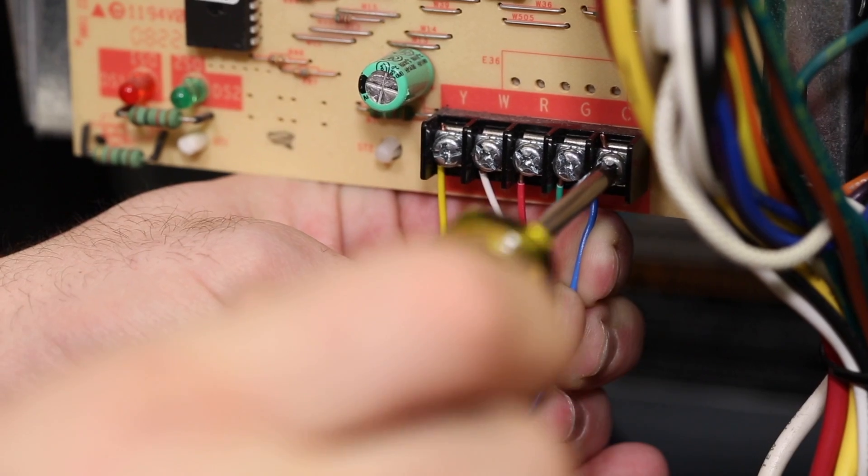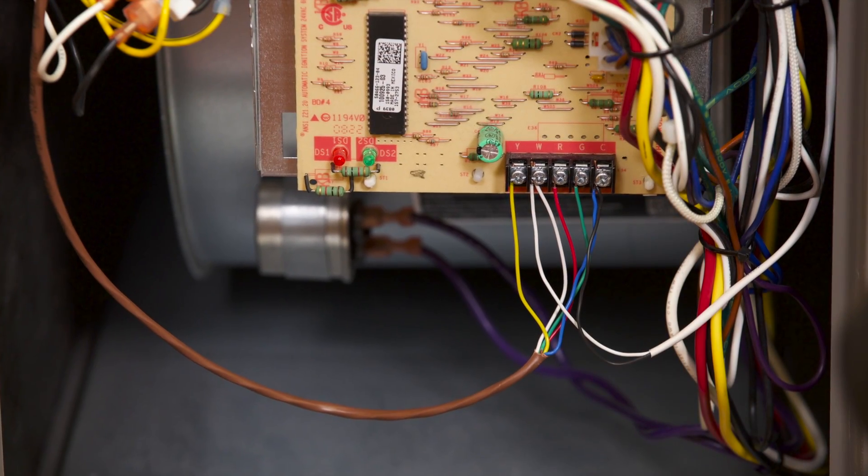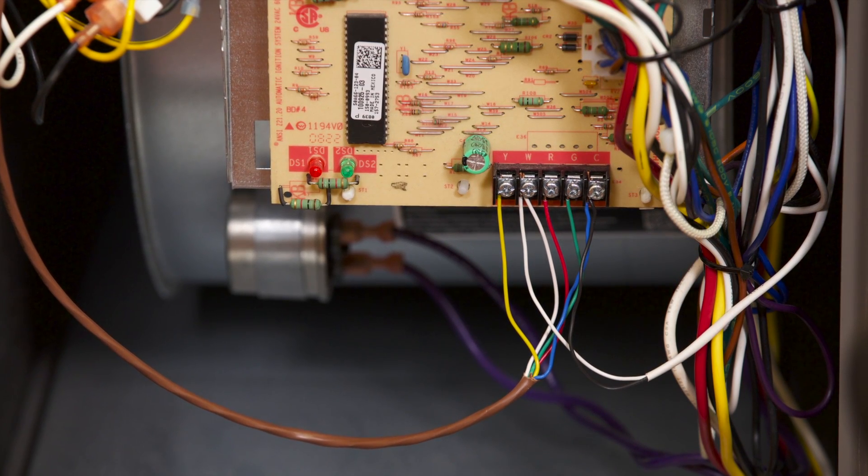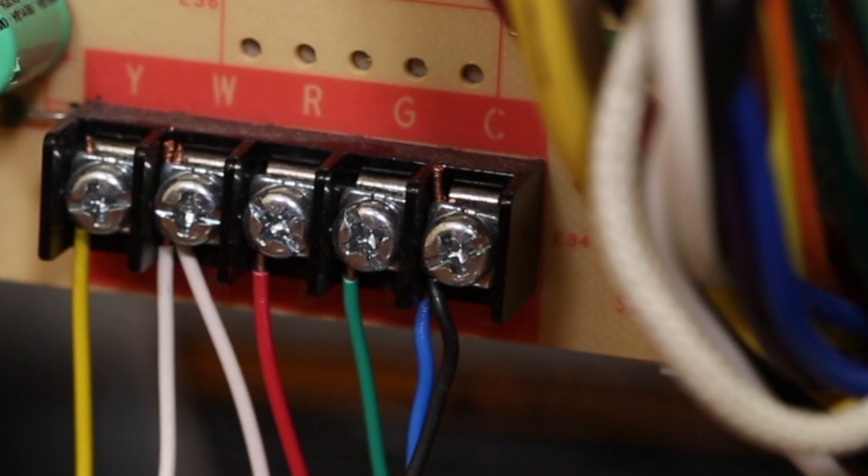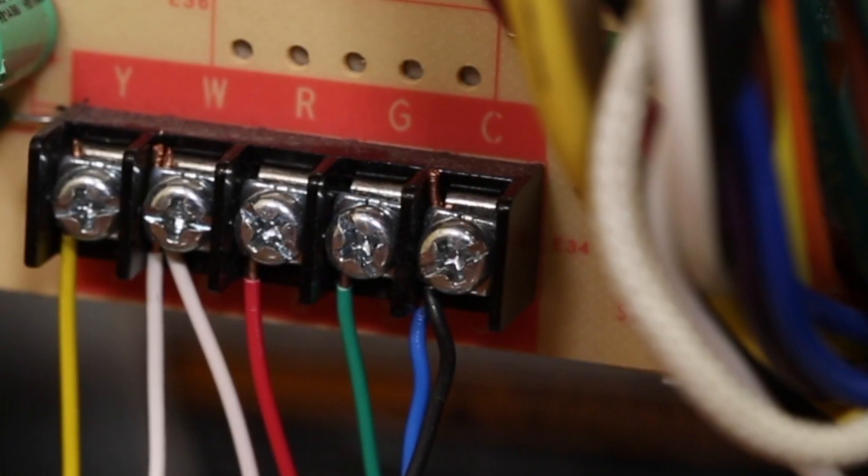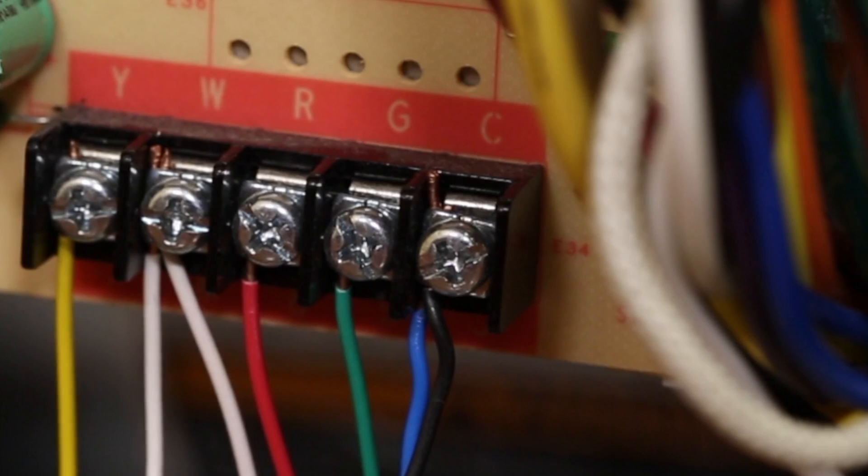When attaching this wire to the C terminal, note that there may already be a wire or wires connected to this terminal. For instance, if you have a humidifier, it may be connected to the C terminal. If this is the case, simply add your new wire, but be sure to leave the existing wire or wires connected as well.